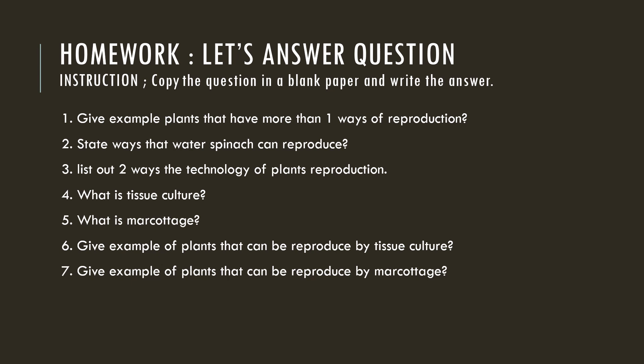Next, we have learned about technology in plant reproduction. There are two techniques: tissue culture and marcottage. In tissue culture, we take the tissue from a parent plant, then transfer it into a medium. The young plant will grow and then become a parent plant. Examples of plants reproduced through tissue culture are orchid and banana.